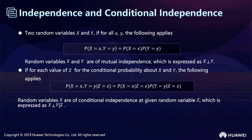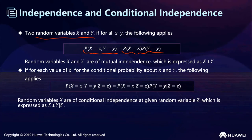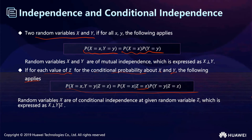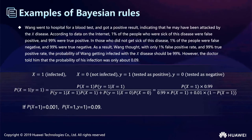Let's see independence and conditional independence. If two random variables X and Y satisfy that their joint probability P(X, Y) equals P(X) * P(Y), then X and Y are independent. For conditional independence: for each value of Z, if the conditional probabilities of X and Y satisfy P(X, Y | Z) = P(X|Z) * P(Y|Z), then under the condition that Z has occurred, X and Y have no effect on each other — this is called conditional independence.